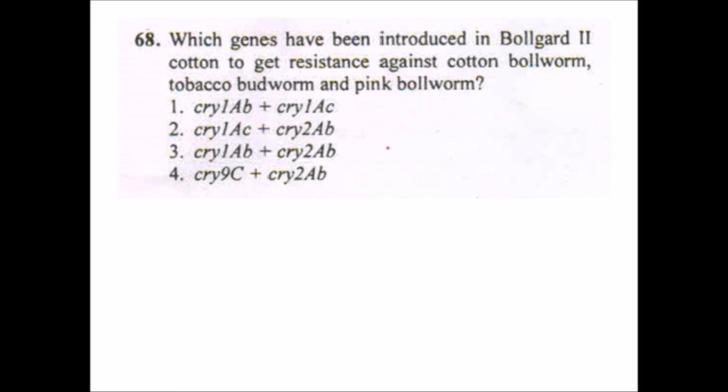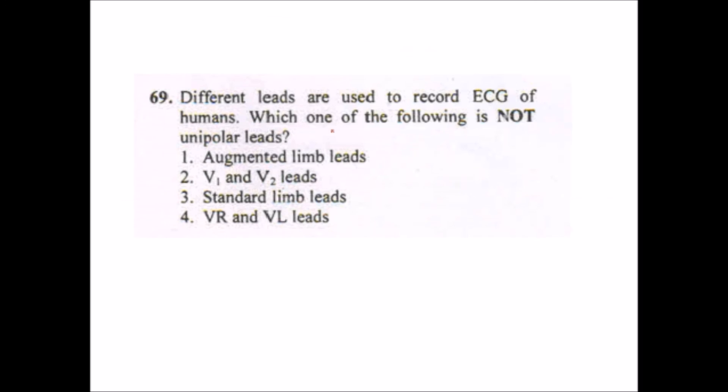But in ELISA, microarray, and flow cytometry we can use optical measurement. In ELISA too, whenever we tag any antibody with any optically active compound, from there we can analyze our result using some optical measurement. Next is: which gene have been introduced in Bollgard II cotton to get resistance against cotton bollworm, tobacco bollworm, and pink bollworm?